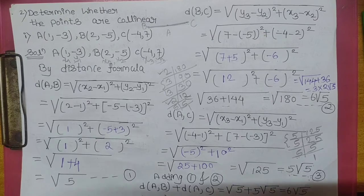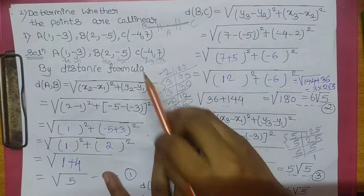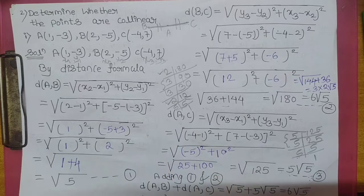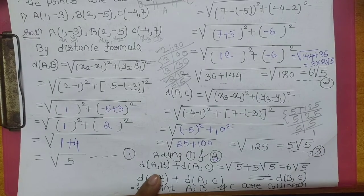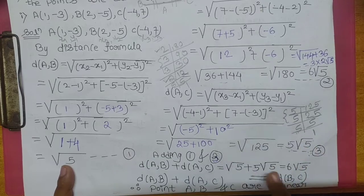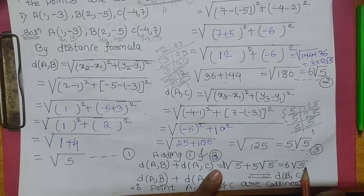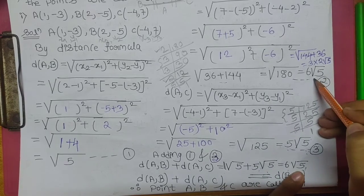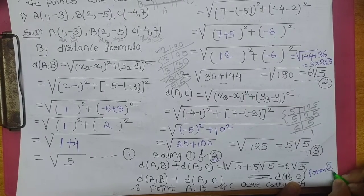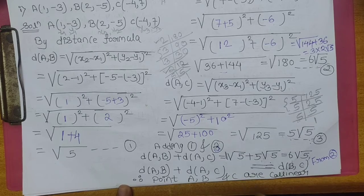Abhi aapne tino distances find kiye: AB, BC, AC. Now add AB plus AC. AB hai square root of 5, AC hai 5 root 5. Yehaan pe 1 plus 5 = 6 root 5. 6 root 5 aapka kya hai? Distance BC. Matlab, jab aapne AB plus AC kiya, to aapko BC aa gaya. Therefore, point A, B, C are collinear.